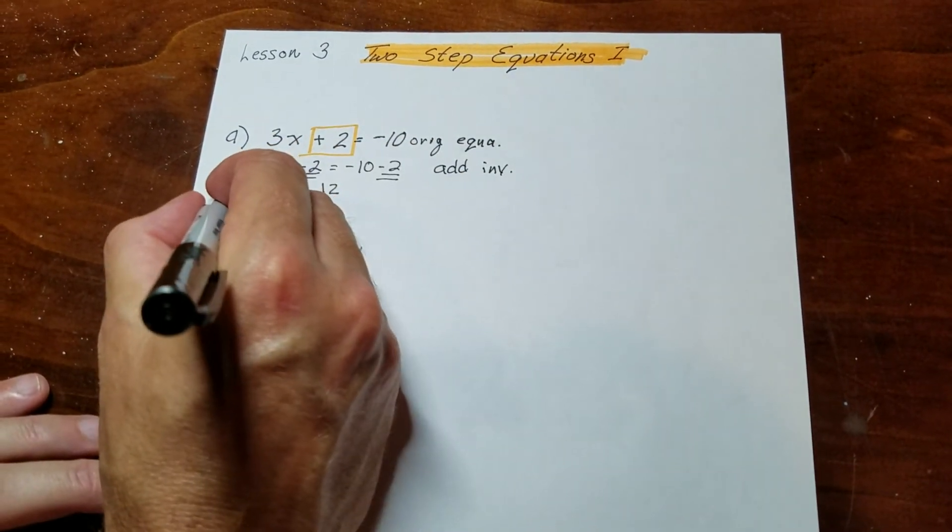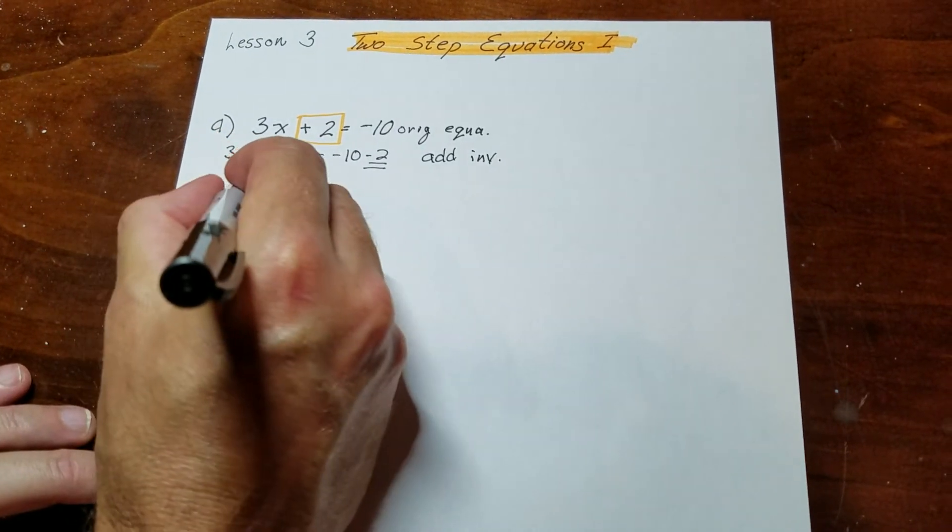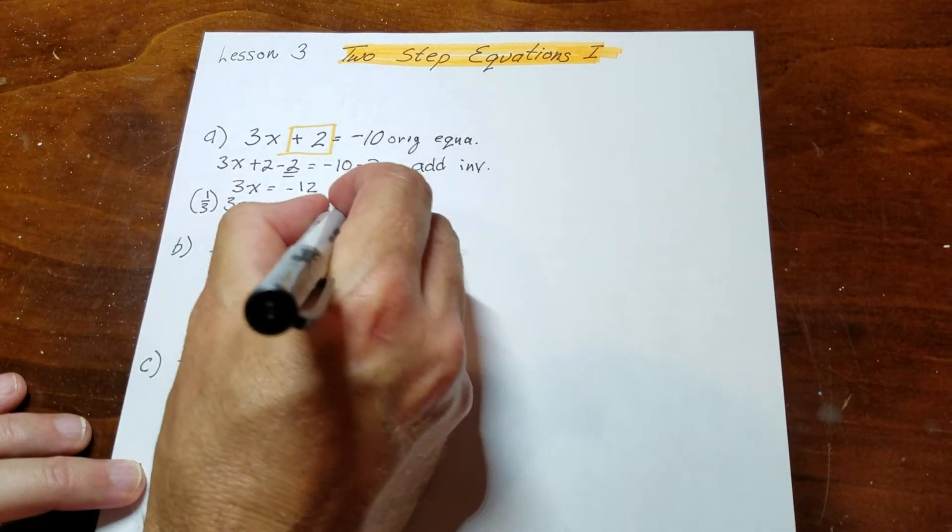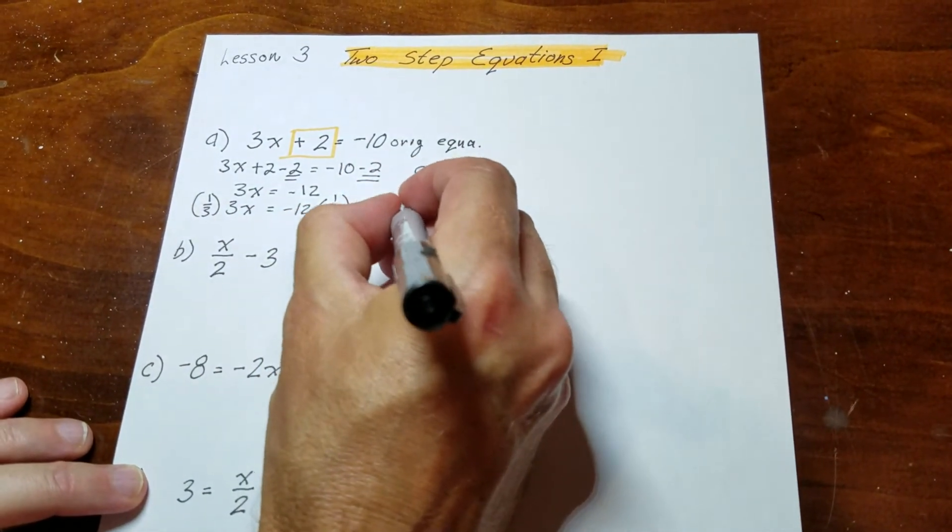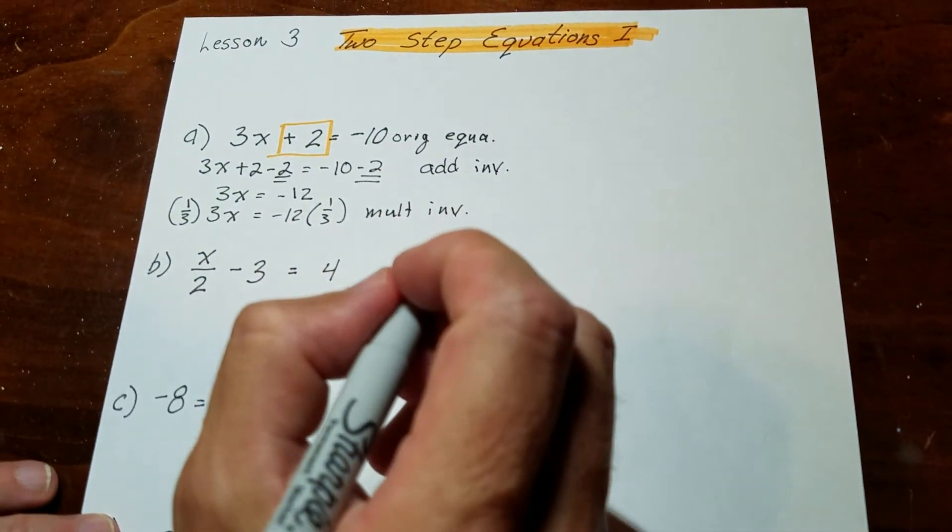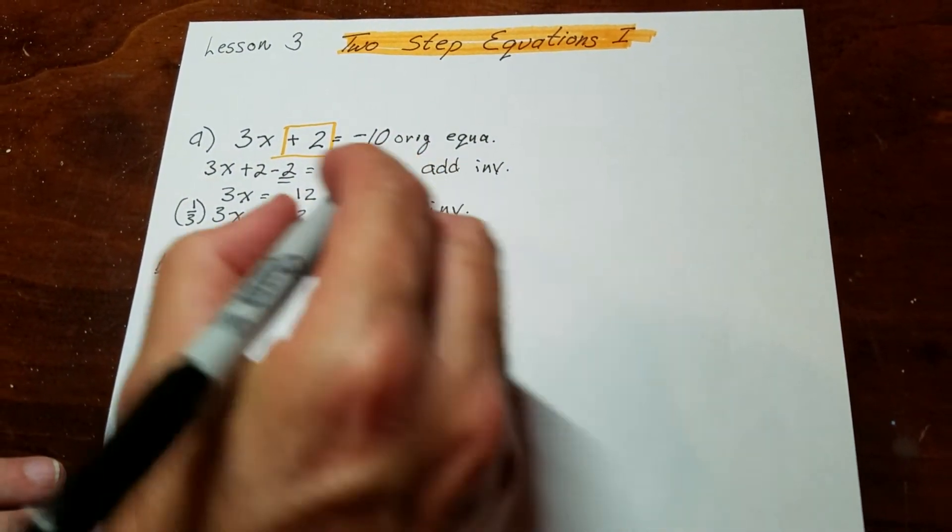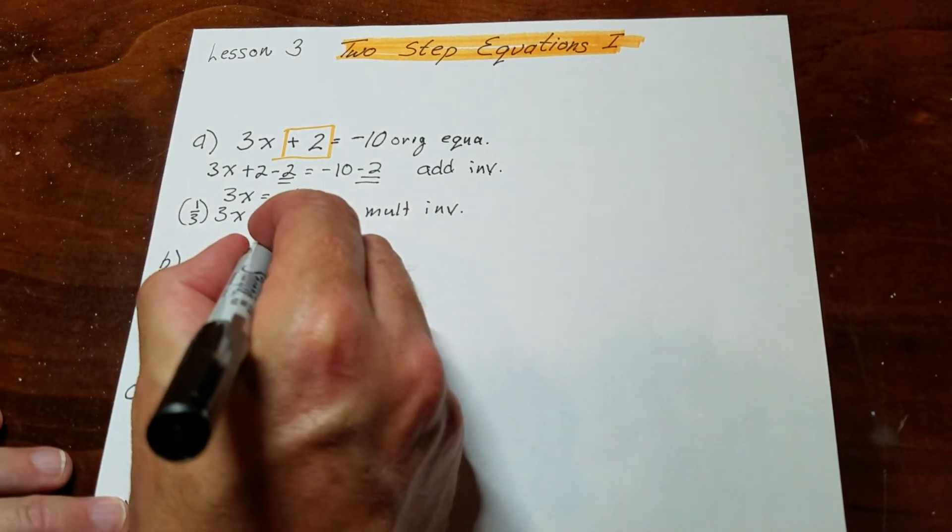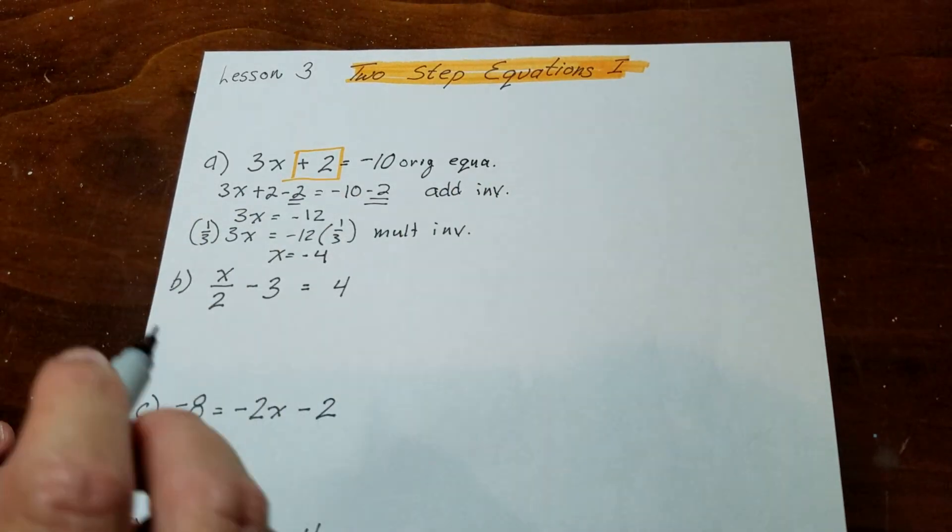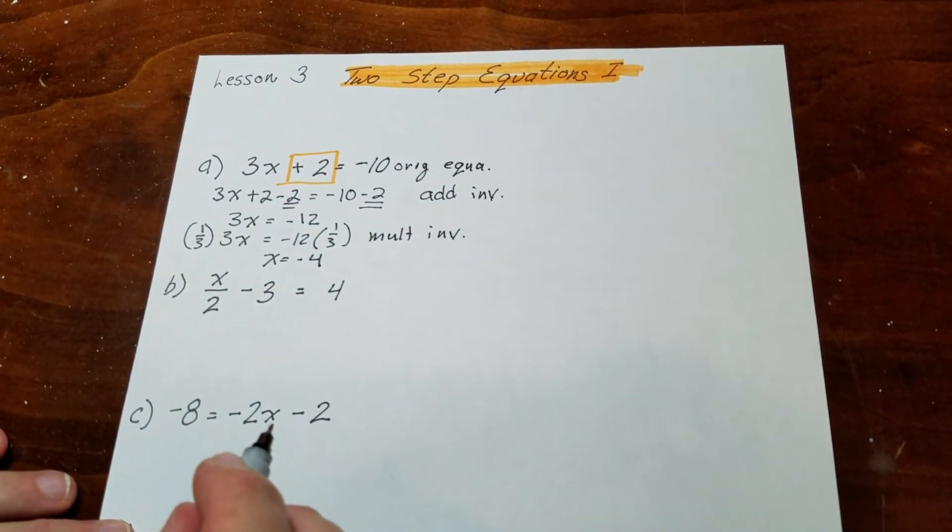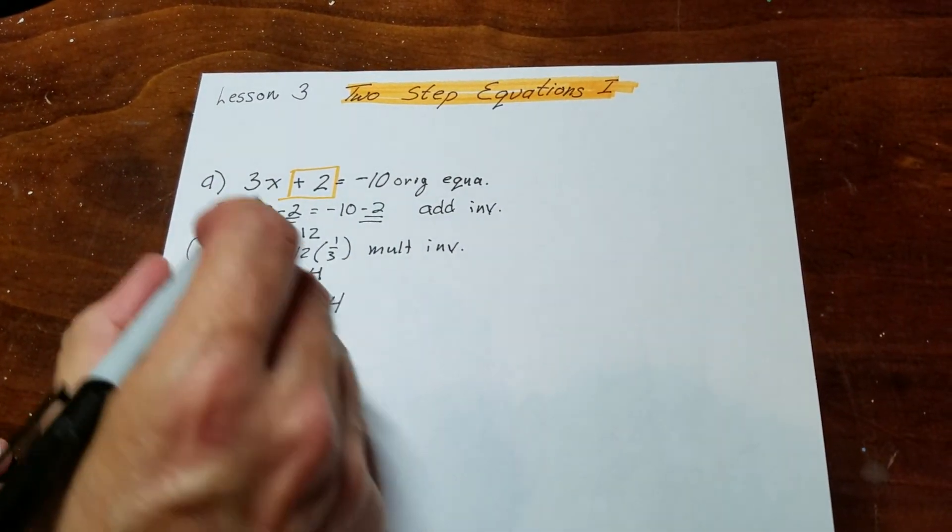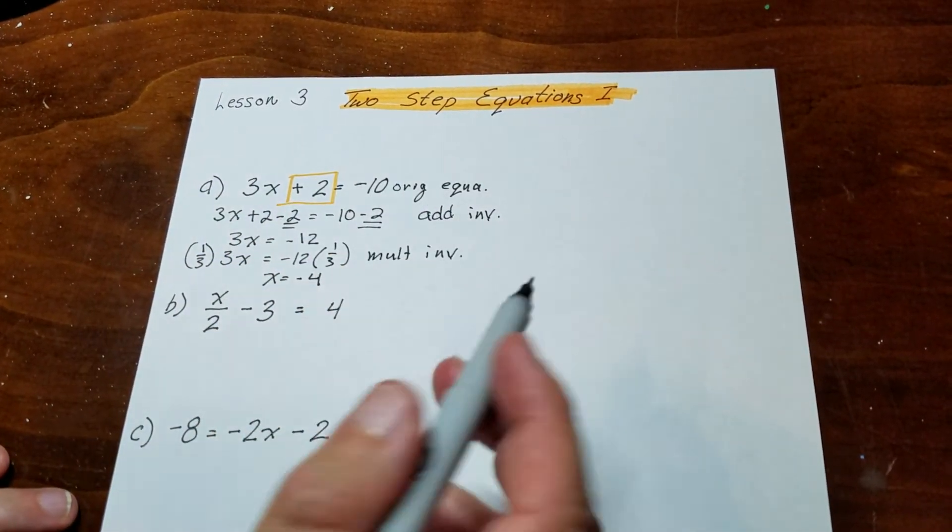If I do the additive inverse, then after that I have 3x is equal to negative 12. The next thing I'm going to do is a multiplicative inverse. If what I just did looks interesting and new to you, you might want to check out the video I have on that particular step. So that's going to bring us to x is equal to negative 4. I can always check my answer by sticking it in here: 3 times negative 4 is negative 12, negative 12 plus 2 is negative 10.